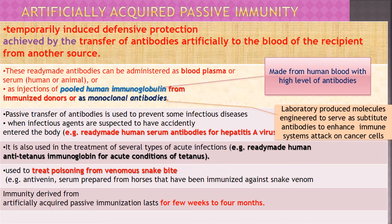Artificially acquired passive immunity is temporarily induced defensive protection achieved by the artificial transfer of antibodies into the blood of the recipient from another source. These ready-made antibodies can be administered as blood plasma or serum.